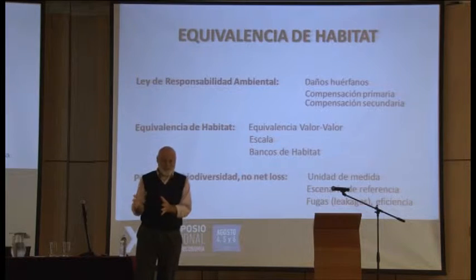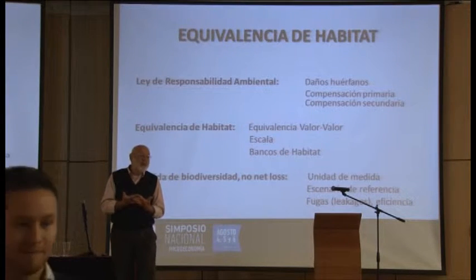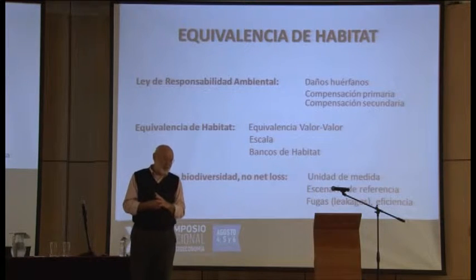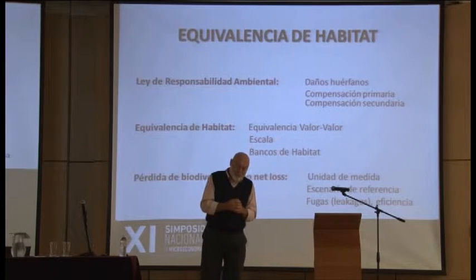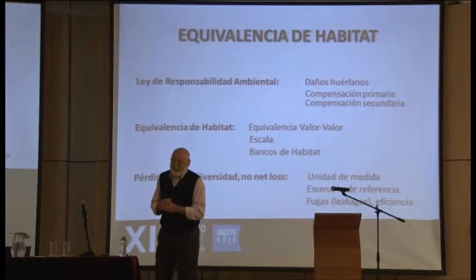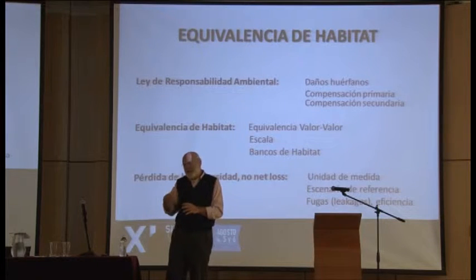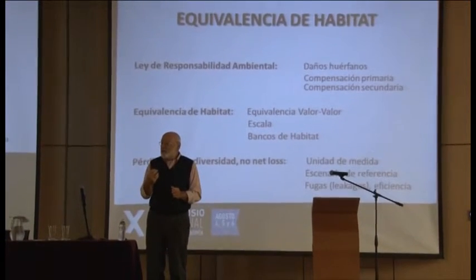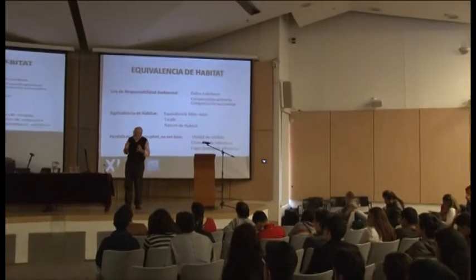Para evitar la pérdida de capital natural en Europa, la ley obliga a que cuando se ha hecho un daño, la empresa de seguros o el responsable del daño responda en las mismas unidades en las que se produjo: es lo que se llama la restauración primaria. Tiene que dejar las cosas como estaban, devolver la naturaleza a su situación original. En algunos casos esto no es posible, por ejemplo si se ha producido un incendio forestal con tal virulencia que ha sacado la roca madre del suelo y ya no hay forma de volver a plantar el bosque que desapareció. Esto da paso a lo que se denomina la restauración secundaria.